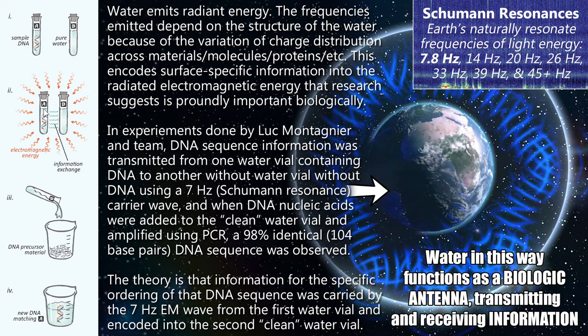This is because the information for the structuring of that DNA — the specific ordering of those base pairs — was carried by that 7 hertz electromagnetic Schumann resonance from the first vial to the second vial. That energy was encoded into the clean water. There was no DNA in that vial; it was absorbed by the water, and then that energy and information was able to inform the nucleic acids on how to connect and combine together once PCR was added, allowing for the building of DNA.